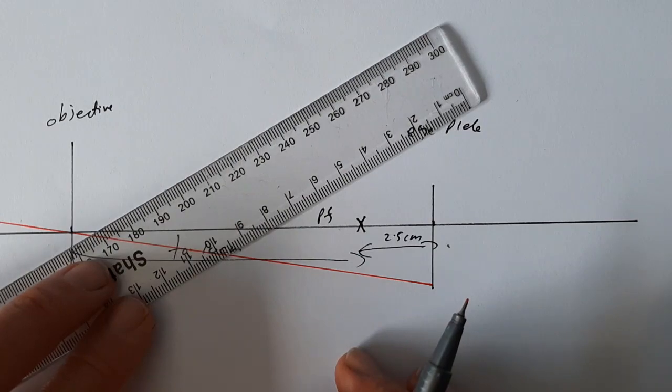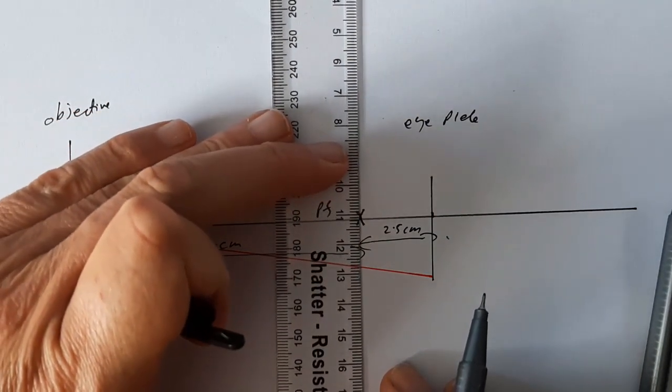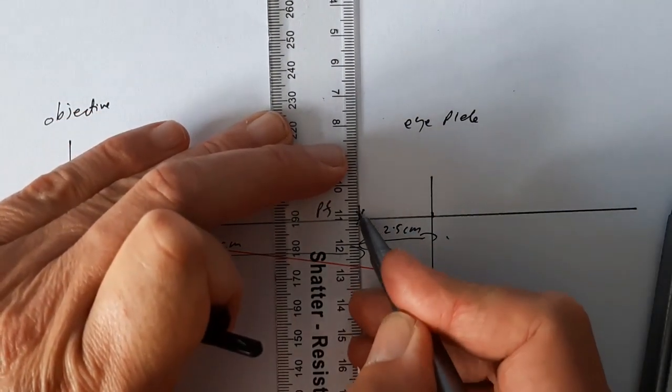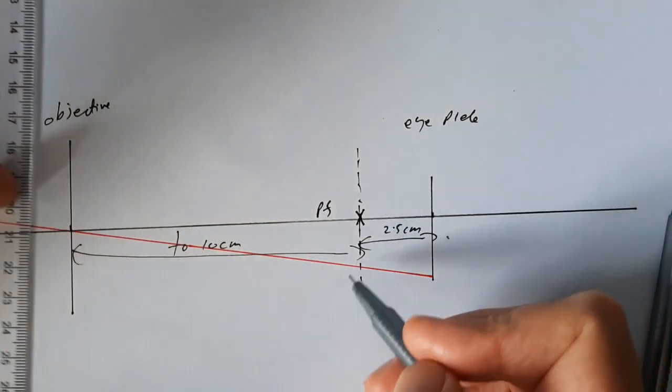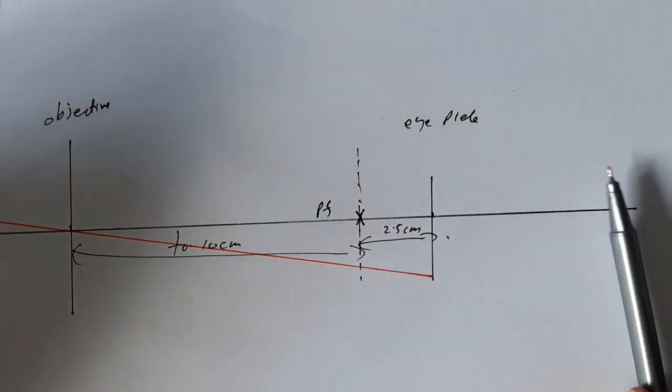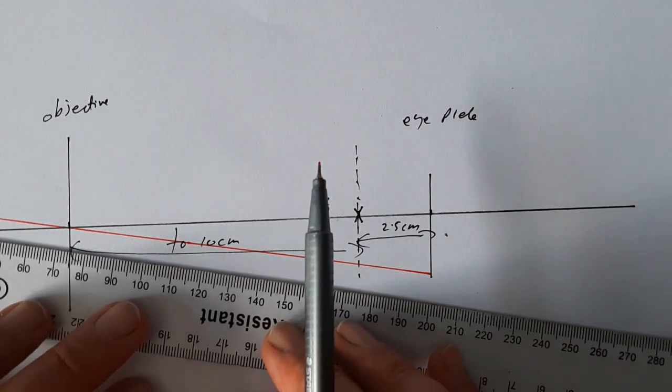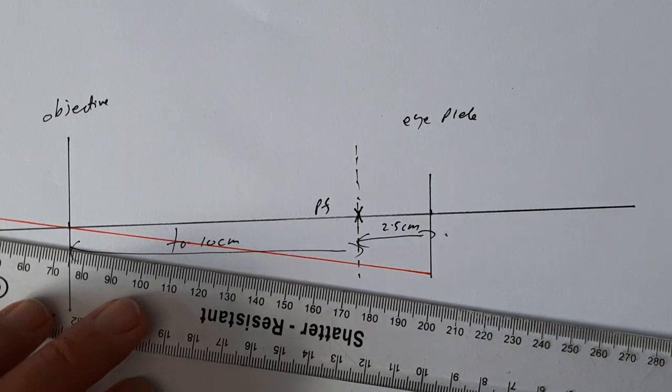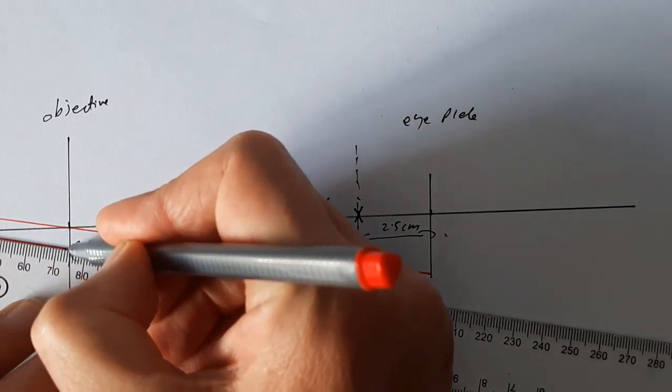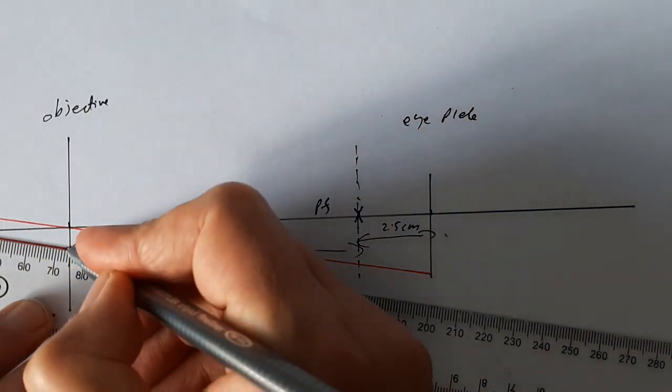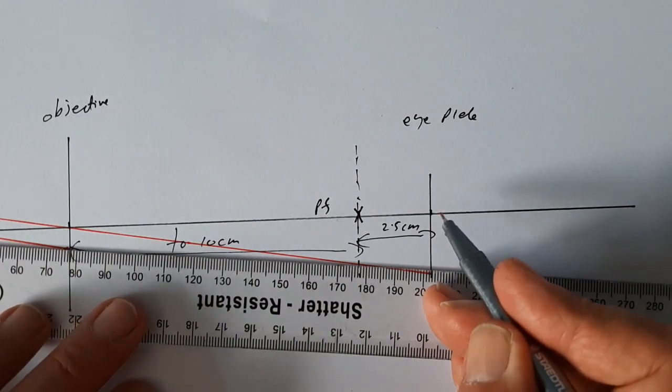What does it do next? Well, we have to imagine this point here, which is in line with the principal focus. So that's where all parallel rays coming through the objective lens will go through that point. So this ray has to be parallel to that ray and has to cross this ray here.